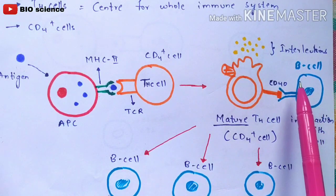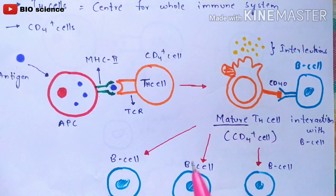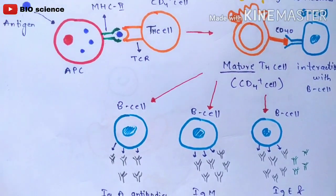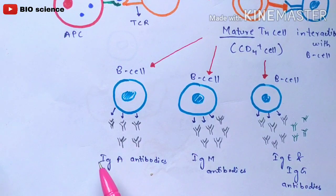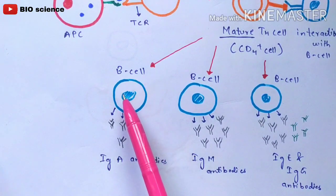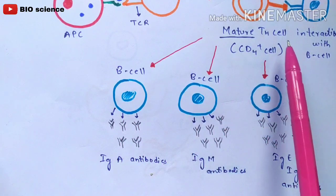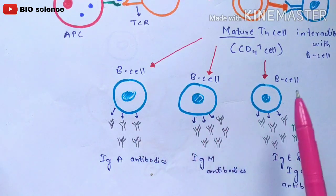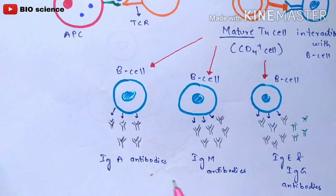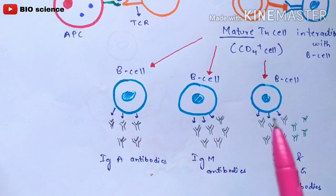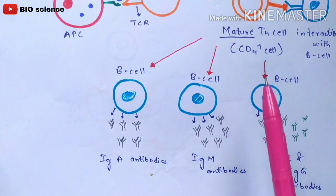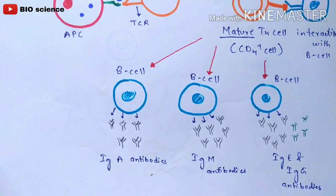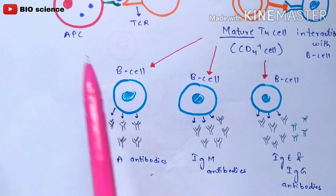Once this interaction occurs, the B cell gets differentiated because different types of antibodies need to be released. For example, one differentiated B cell releases IgA antibodies, another releases IgM antibodies, and a third releases both IgE and IgG antibodies. These antibodies then bind to the antigen and kill it, protecting your body from the disease associated with that antigen.